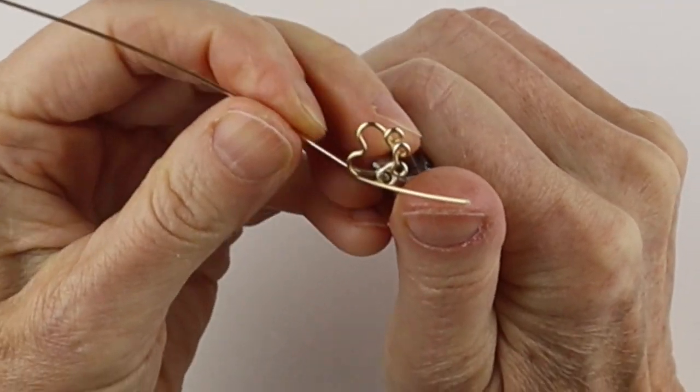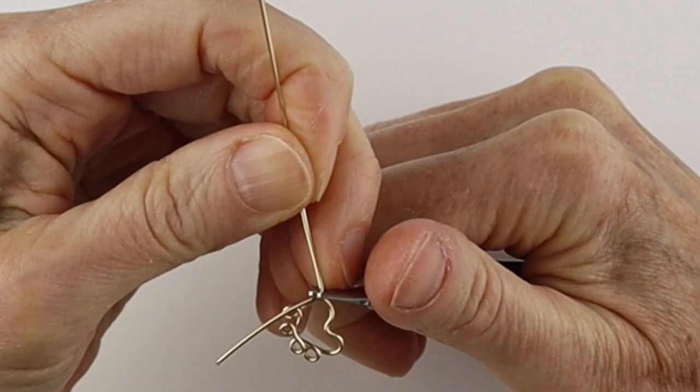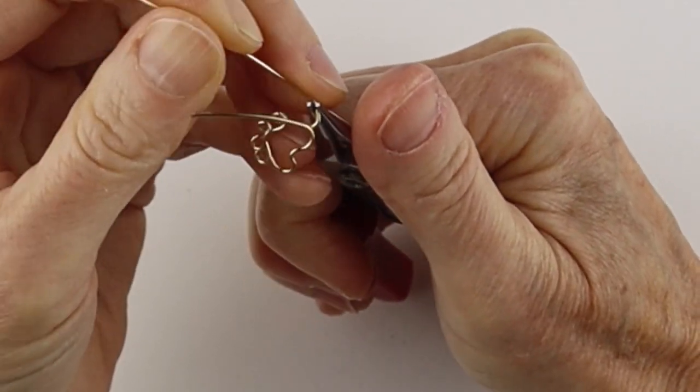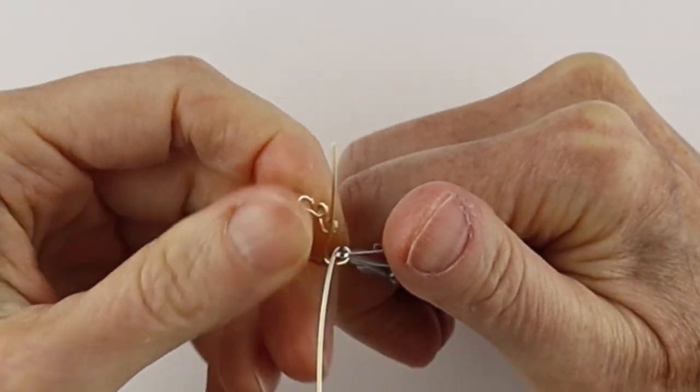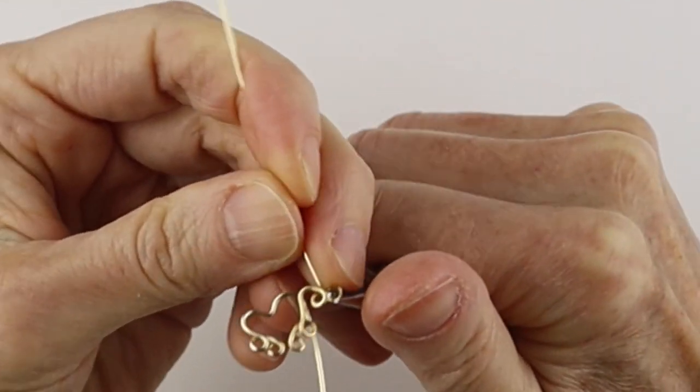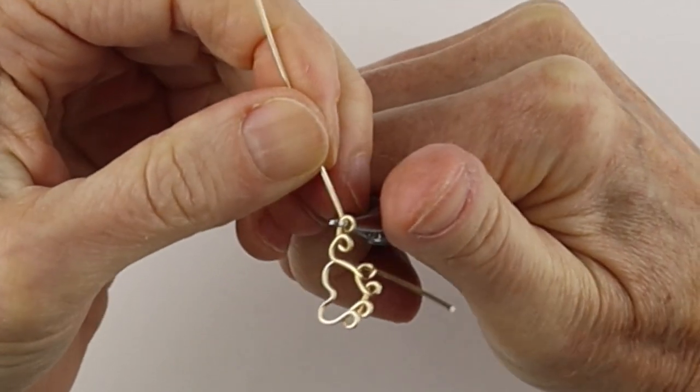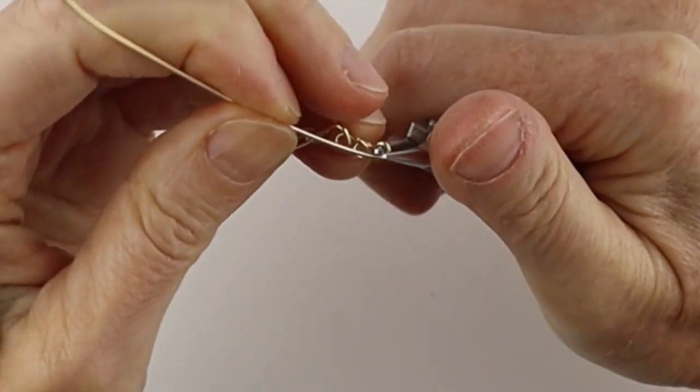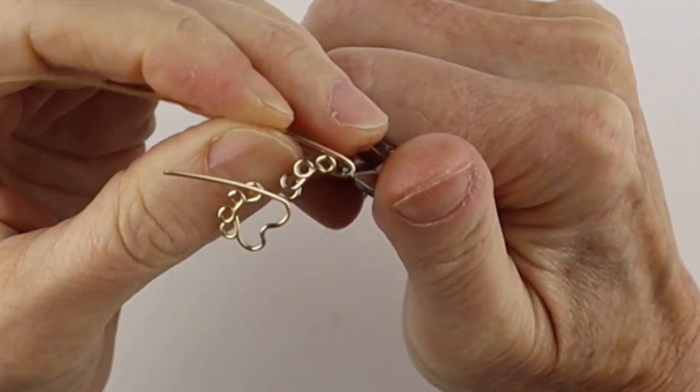Curve this one down a little bit and then towards the bottom bring it out at an angle and then bring this one straight up and start forming the toes on this side. So bring it towards the front and another one the same direction, and then bring this one down and form the toes but bring the wire to the back. And then do another one bringing the wire to the back again.